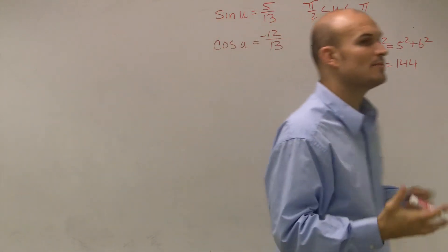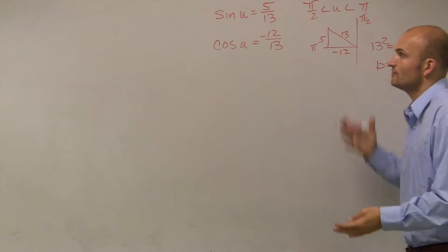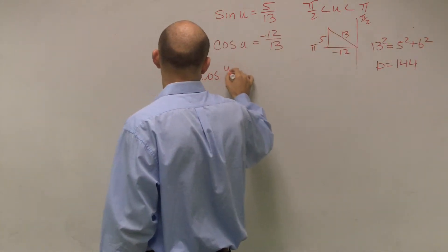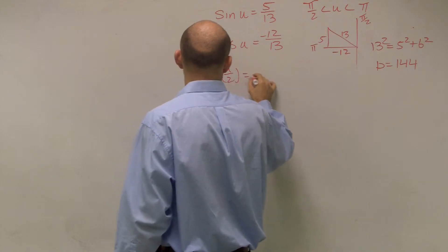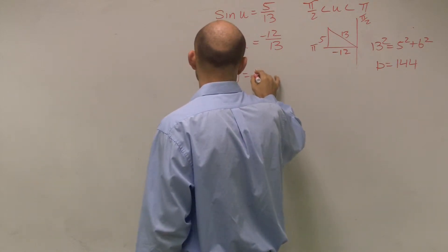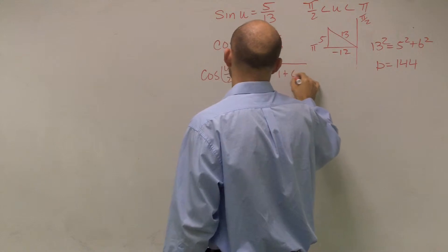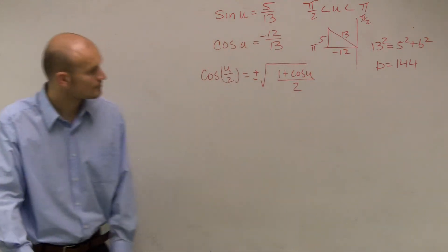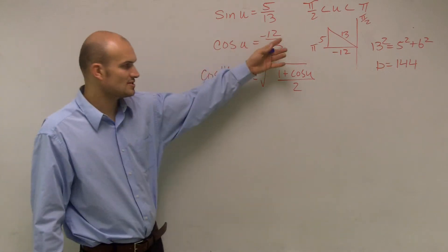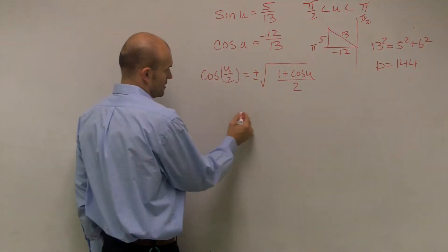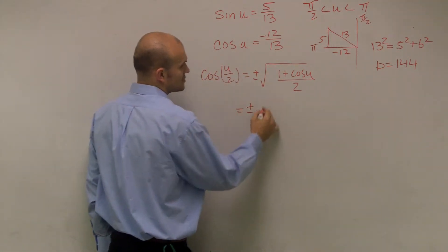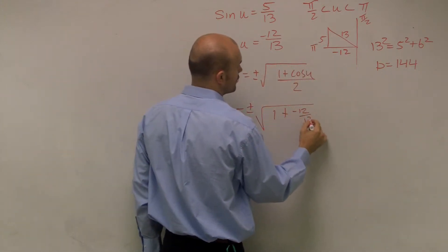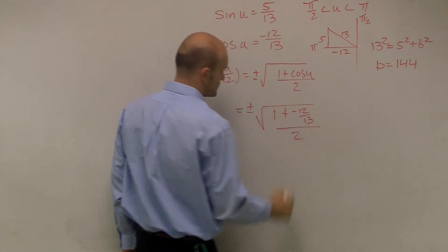Now I'll recall the half angle formula for cosine: cosine of u/2 equals plus or minus the square root of (1 plus cosine u) all over 2. I take my cosine value and plug it in: plus or minus the square root of (1 plus negative 12 over 13) all over 2.